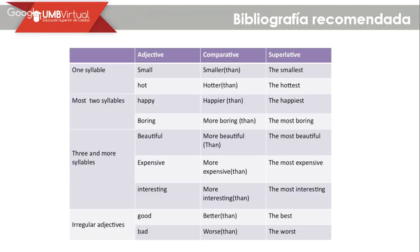In the superlative form we say 'the smallest.' For example, comparing animals: the elephant is the biggest animal in the jungle. For the smallest, we can say the ant is the smallest insect on land. Also, 'hotter' and 'the hottest' — Barranquilla is hotter than Bogotá, and Puerto Inirida is the hottest city in Colombia. That is the reference when we have one-syllable adjectives.